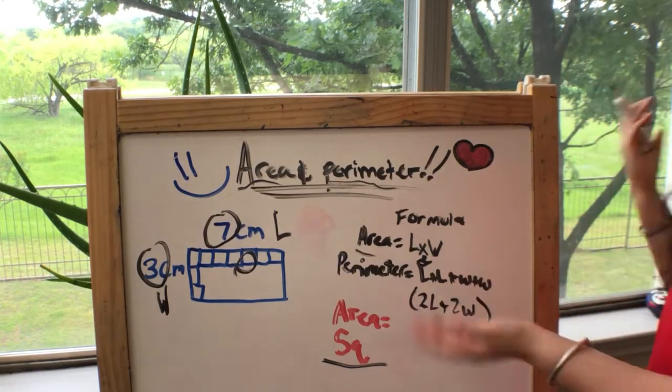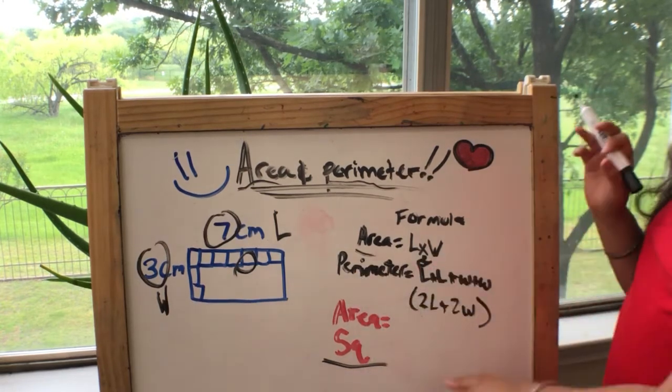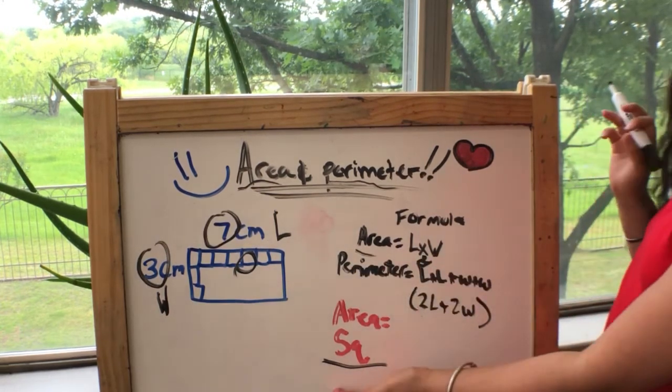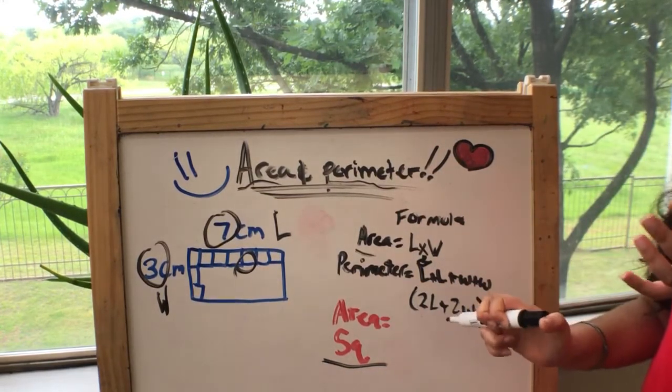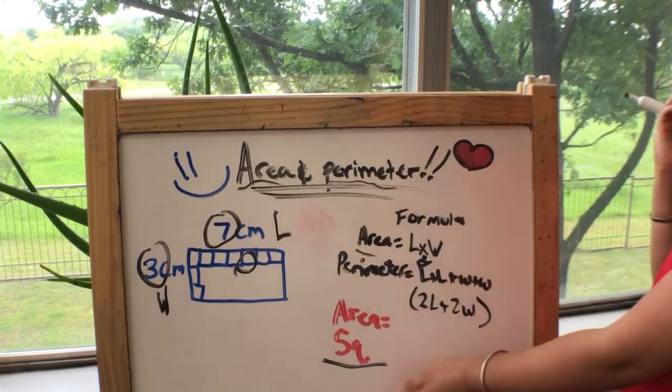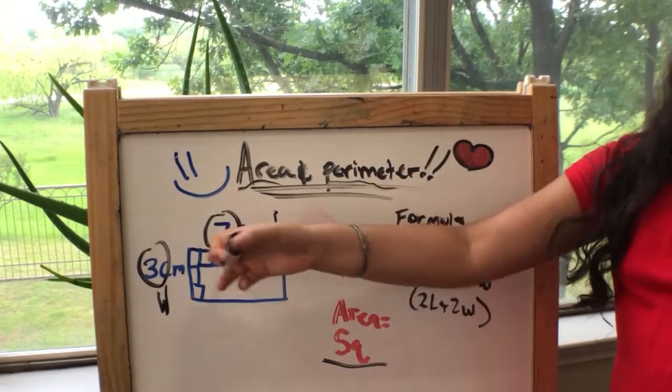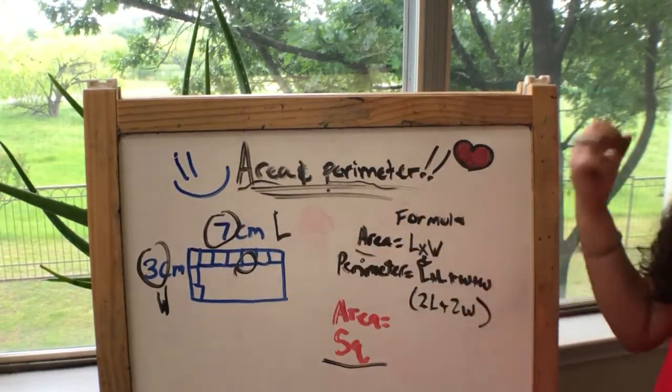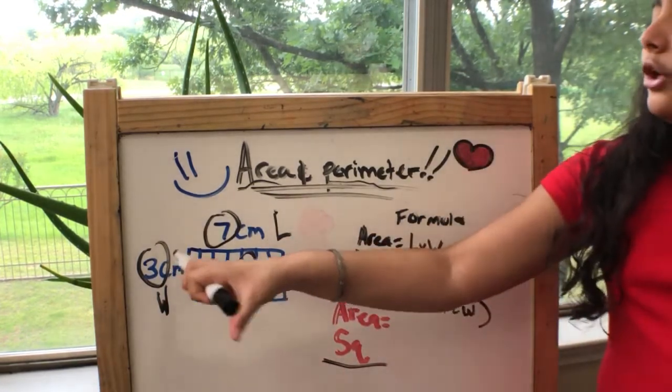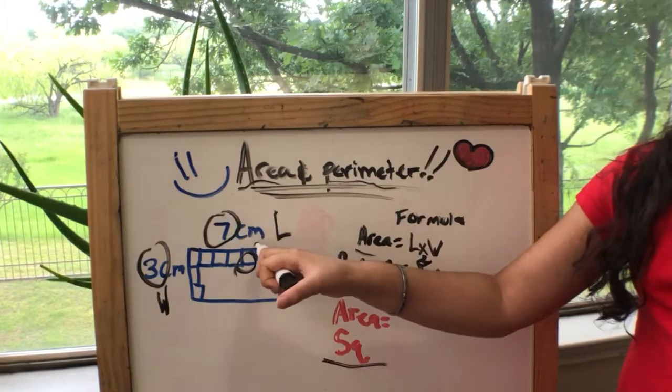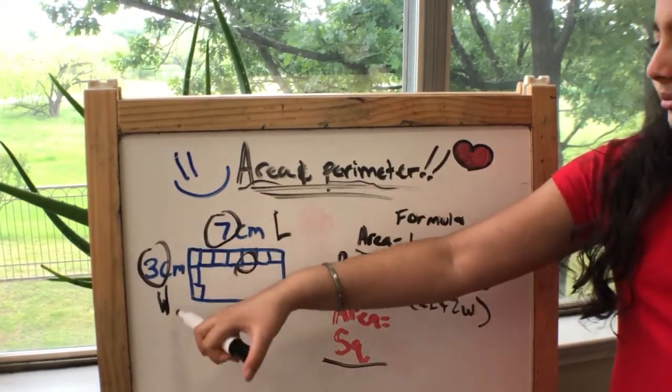We went over the formulas. Area is measured in square units. As you could already see, I kind of worked a little bit here. So we have seven centimeters here at the top, three centimeters here at the width.